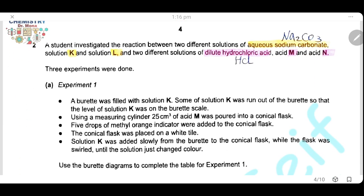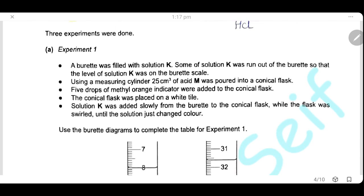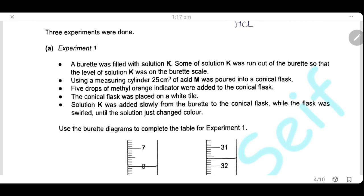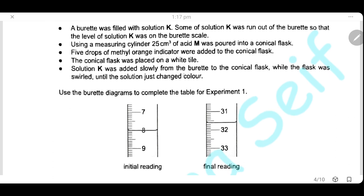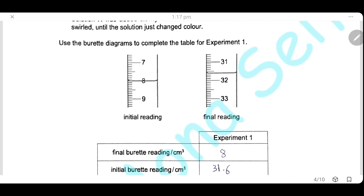Question 2. A student investigated the reaction between two different solutions: aqueous sodium carbonate with two different solutions K and L, and two different solutions of dilute hydrochloric acid with two different concentrations M and N. Three experiments were done. In the first experiment, solution K, sodium carbonate, react with 25 cm³ of solution M, hydrochloric acid. We are using methyl orange as indicator and the conical flask was placed on a white tile. Solution K was slowly added from the burette while the flask was swirled until the solution just changed in color. Here is the initial reading and the final reading for solution K.